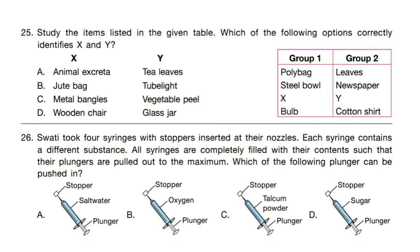Question 25: Study the items listed in the given table. Which of the following options correctly identifies X and Y? Look at the table and try to find out X and Y. Correct answer is option C — X is metal bangles and Y is vegetable peel.